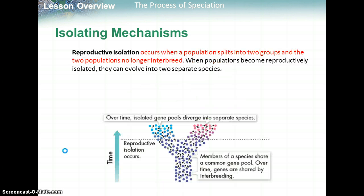One isolating mechanism is reproductive isolation. This occurs when a population splits into two groups and the two populations no longer interbreed, like the horse and the donkey example. When populations become reproductively isolated, they can evolve into two separate species. Members of a species share a common gene pool, but then some sort of reproductive isolation occurs and two different species result.